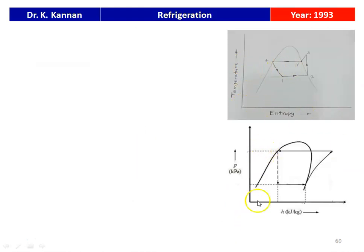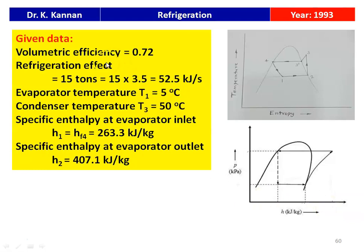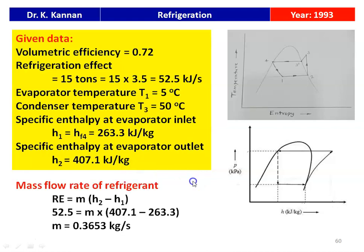Given data: volumetric efficiency = 0.72, refrigeration effect = 15 tons = 52.5 kJ/s, evaporator temperature T1 = 5°C, condenser temperature T3 = 50°C. H1 (evaporator inlet) = HF4 = 263.3 kJ/kg; H2 (evaporator outlet) = 407.1 kJ/kg. Mass flow rate of refrigerant from refrigeration effect: RE = m × (H2 − H1), so 52.5 = m × (407.1 − 263.3), giving m = 0.3653 kg/s.